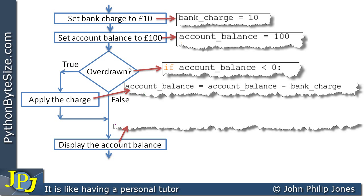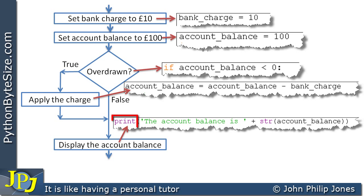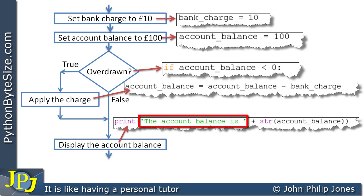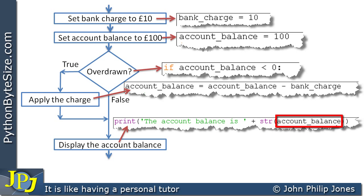The next line of code would be: print, and in brackets a literal string which is 'the account balance is', concatenated to the account balance after it's been converted to a string.